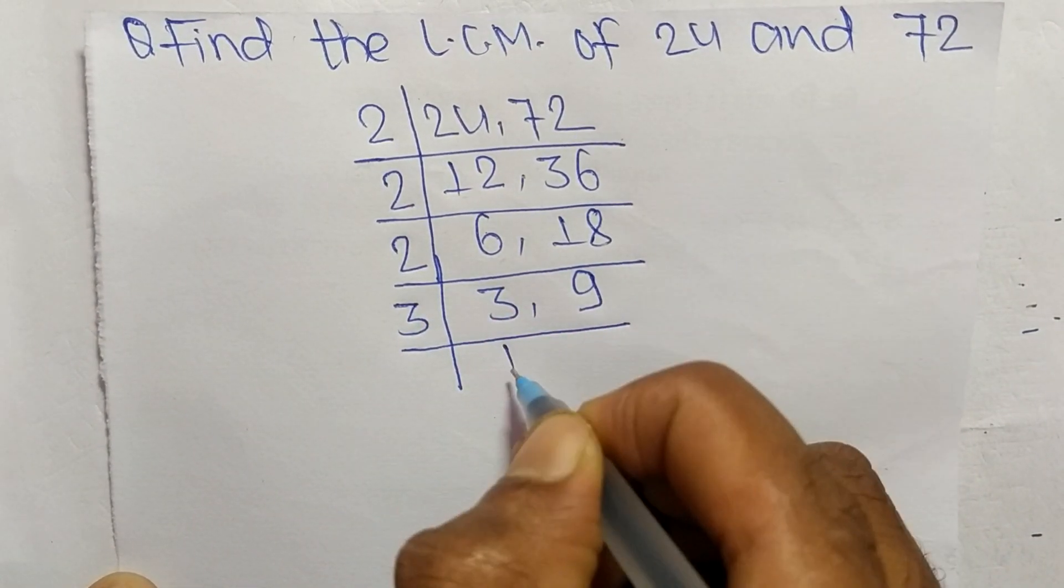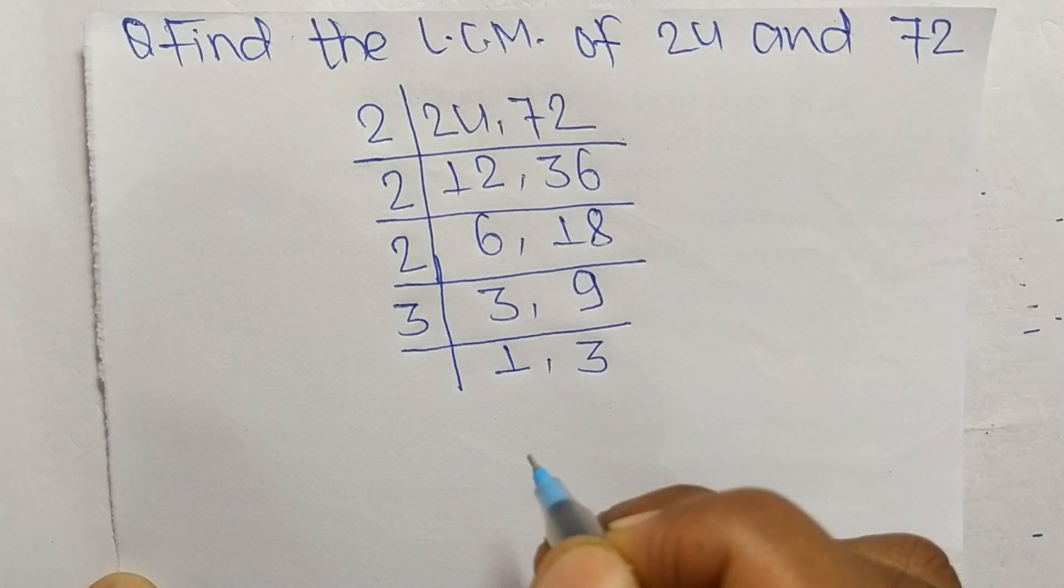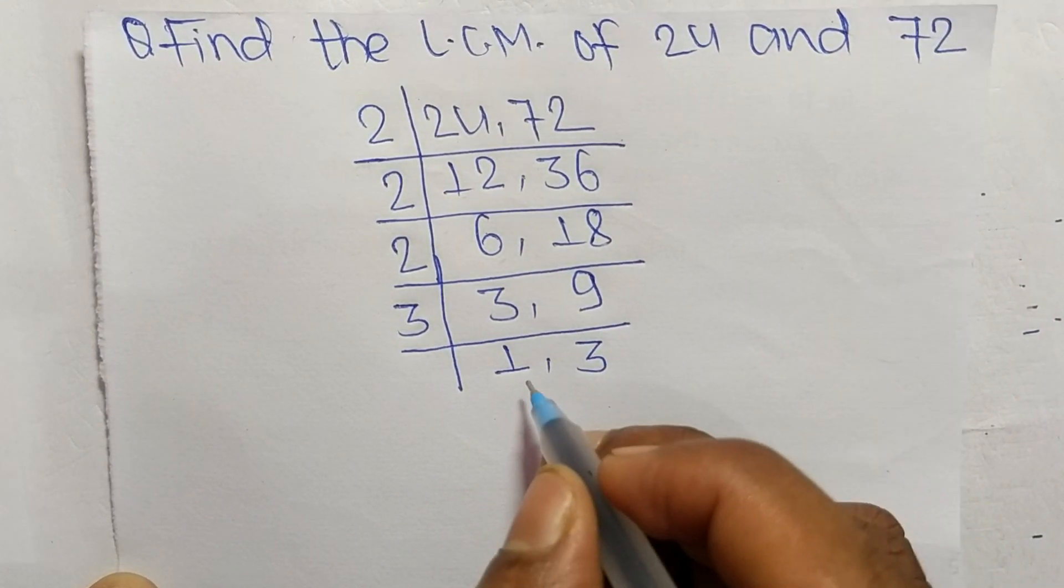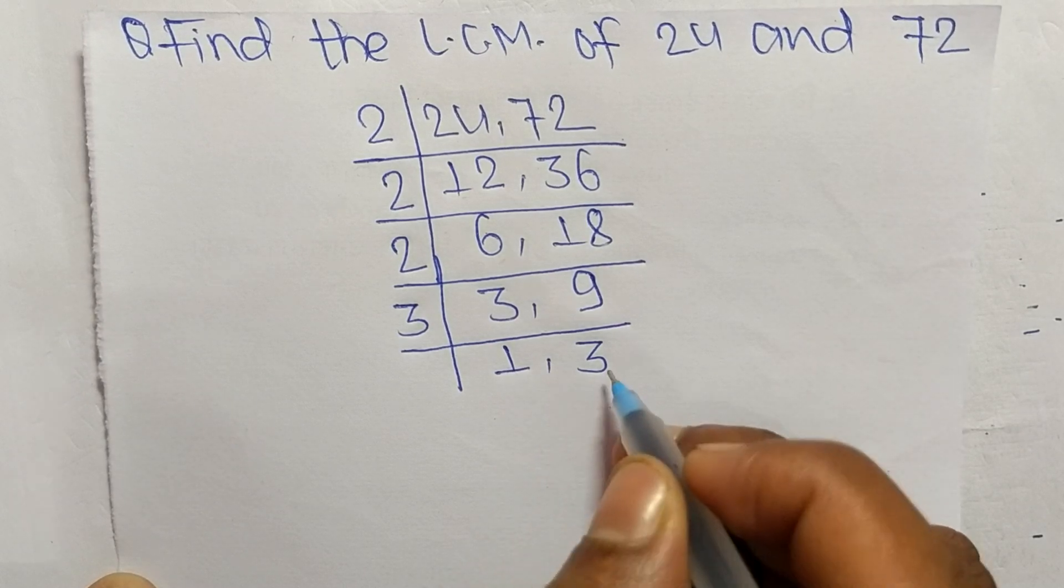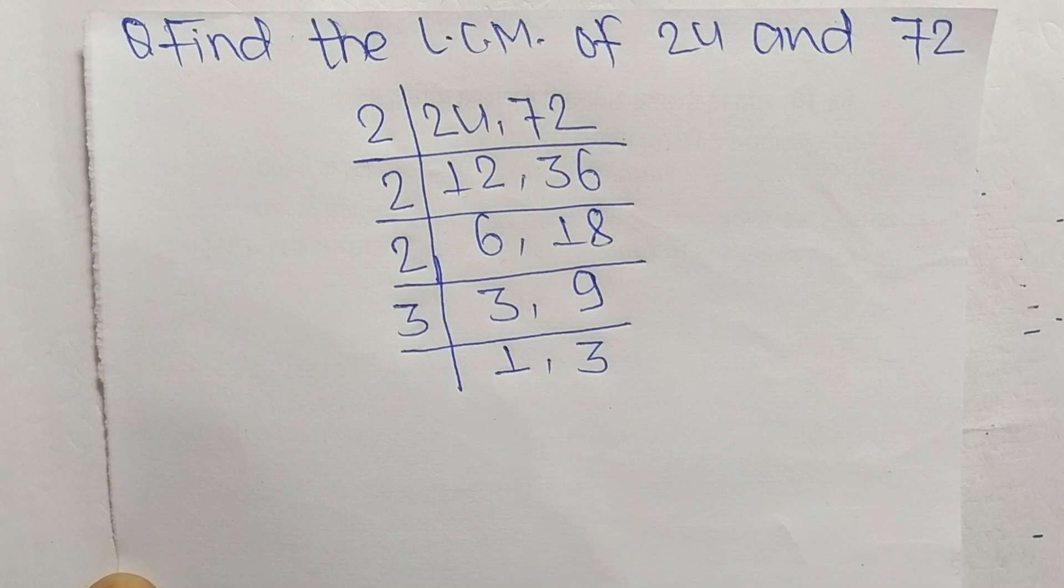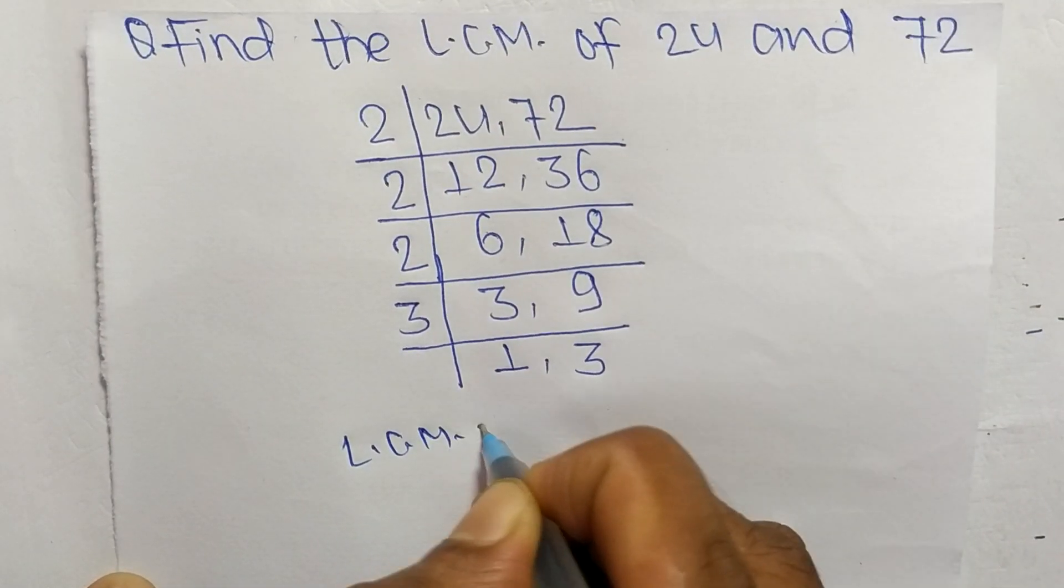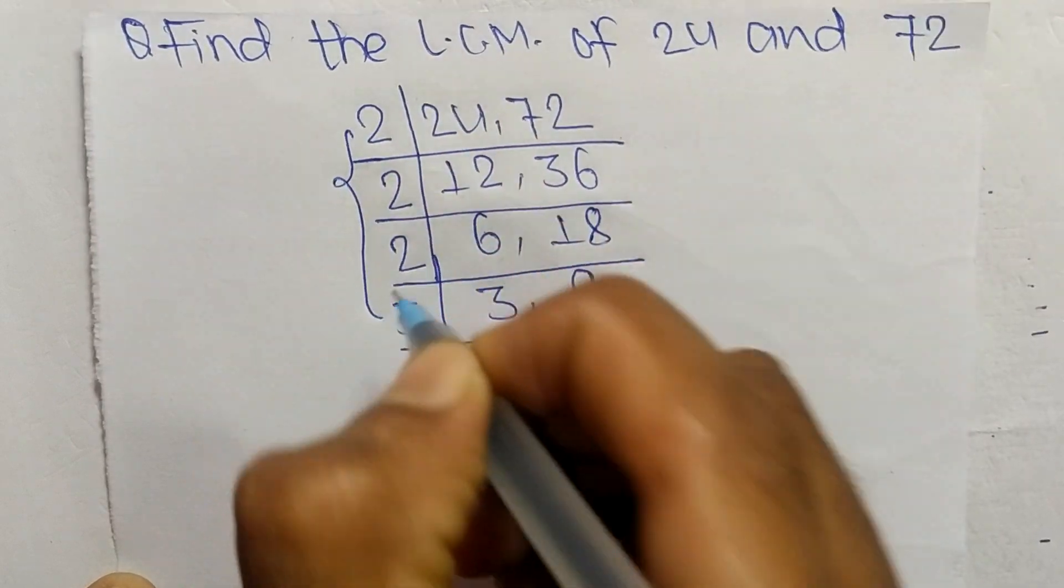So 3 times 1 means 3 and 3 times 3 means 9. So at last we have here 1 and 3 which are not exactly divisible by any other numbers. So its LCM is equal to from this part it is 2 times 2 times 2 times 3.